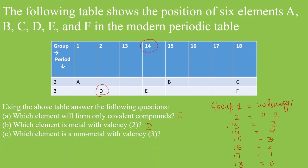Now, third question, which element is non-metal with valency 3? It means you need to find out non-metal. So, elements which are present in group 14 to 18, all these elements are considered as non-metal. Now, the second is that non-metal should be having valency 3. It means if we just observe this table, group number 15 have valency 3. So, which element is present in group number 15? That is B. So, answer to this question is B.